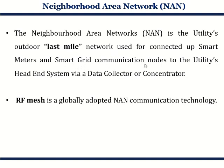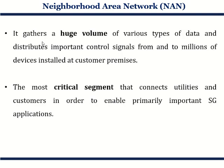In order to make NAN effective and have proper communication and data, the technology NAN uses is RF mesh — radio frequency mesh — which is globally adopted for NAN communication technology. It gathers a huge volume of data because, being located near the distribution end, it has a large number of users associated with it, resulting in a huge volume of data. This data is important for control signals going to and from the millions of devices installed at customer premises. NAN is the most critical segment connecting utilities and customers to enable primary smart grid applications.